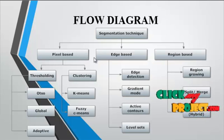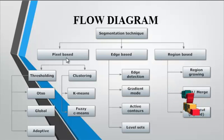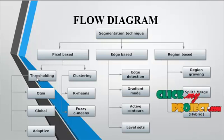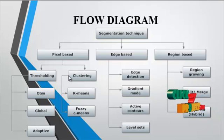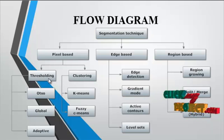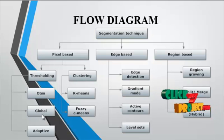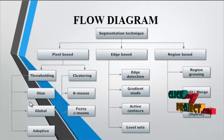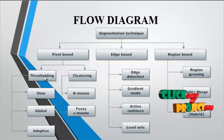These three major categories are used for this process. In the pixel-based process, first we have to calculate the thresholding for the image and then apply clustering. For thresholding, we use the OTSU method, global thresholding, and adaptive thresholding. By combining these thresholding methods, we obtain the thresholding value from the image.